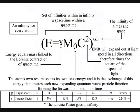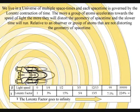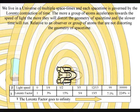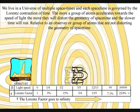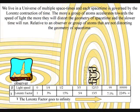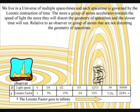We therefore live in a universe of multiple space-times, and each space-time is governed by the Lorentz contraction of time. The more a group of atoms accelerates towards the speed of light, the more they will distort the geometry of space-time, and the slower time will run, relative to an observer or group of atoms that are not accelerating.